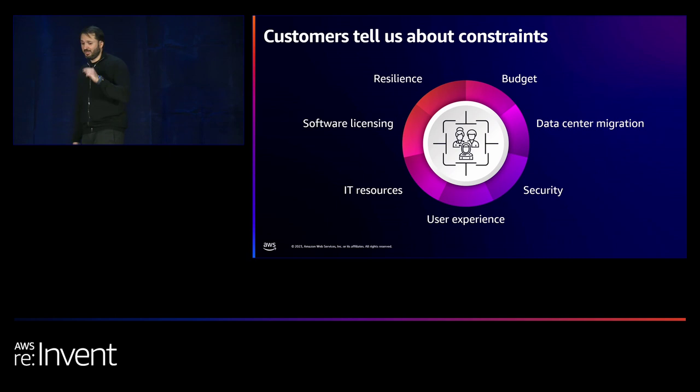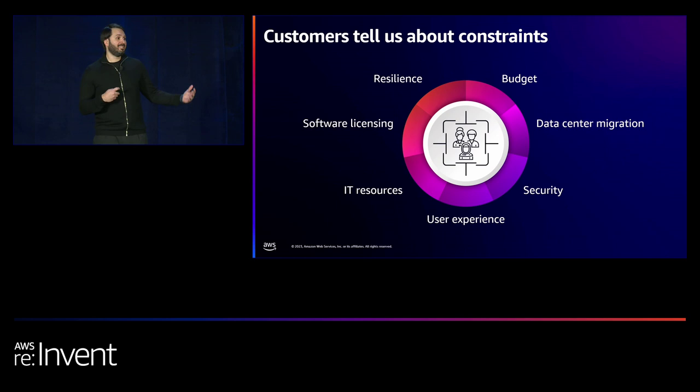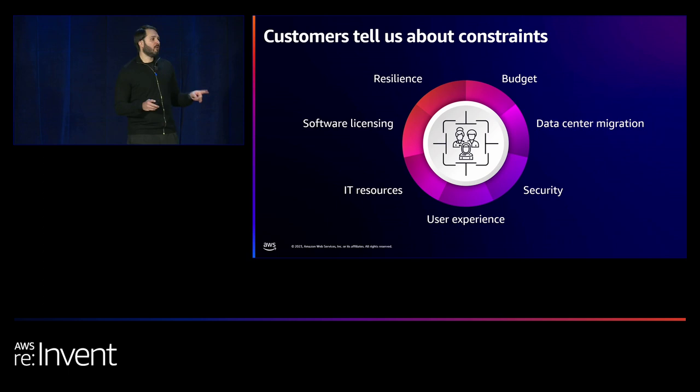The number one thing I glean after talking to customers for many years thinking about End User Computing is constraints. Whether it's cost-cutting, especially in recent times, or a deadline to get out of your data center, or security — which always seems like it's evolving on a daily basis — or staffing, or access to regular software. Software licensing with this group is something we've been entrenched in for many years. All of these things are constraints that every single person in this room thinks about on a regular basis.